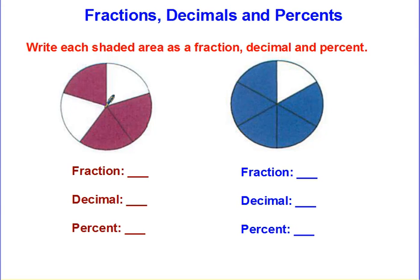If you have 1, 2, 3, 4, 5 sections, 3 of which are shaded, you would say you have a fraction of 3 fifths.